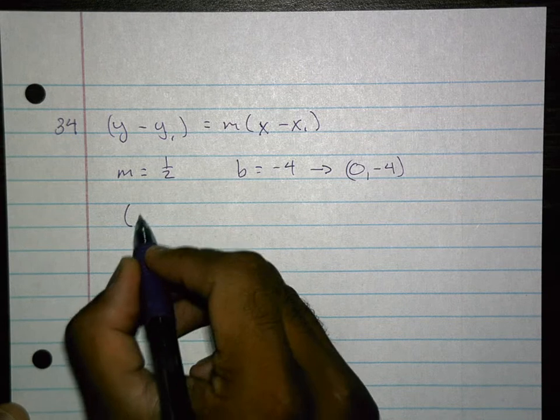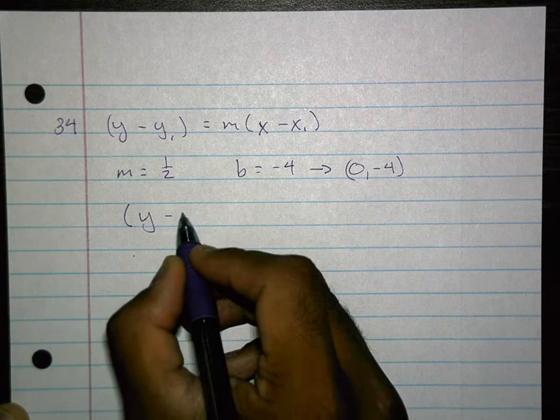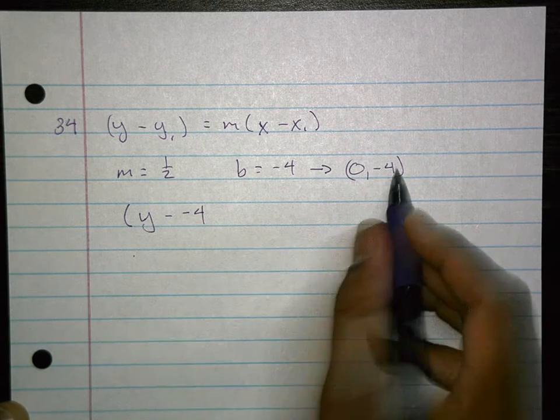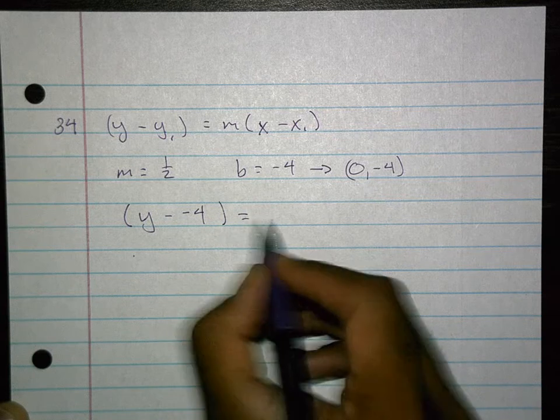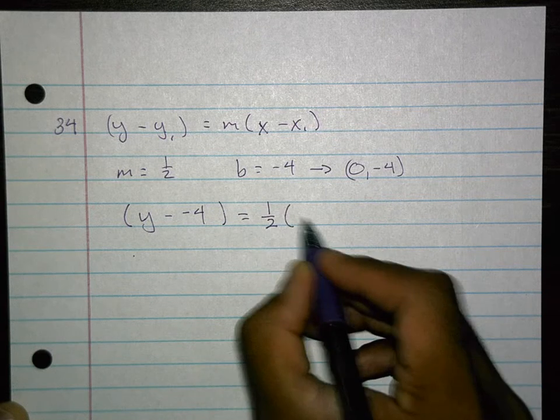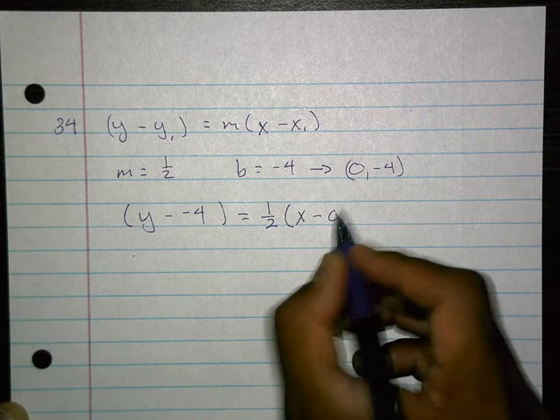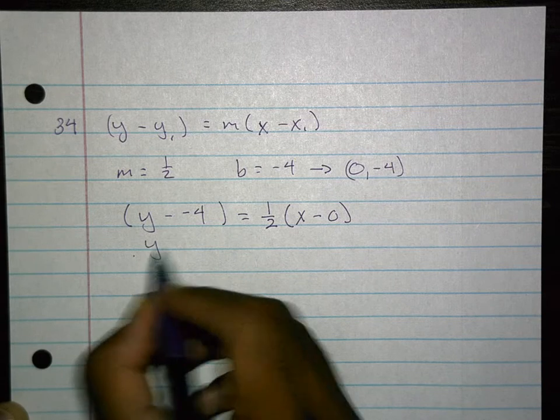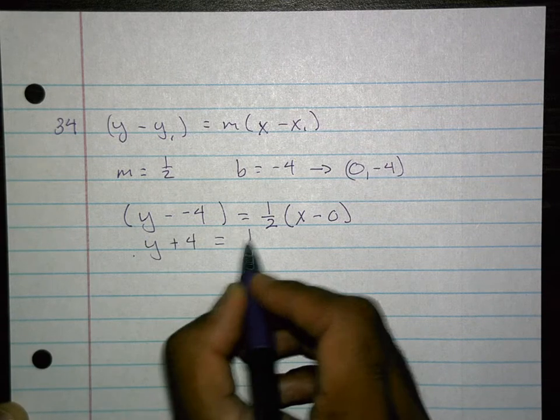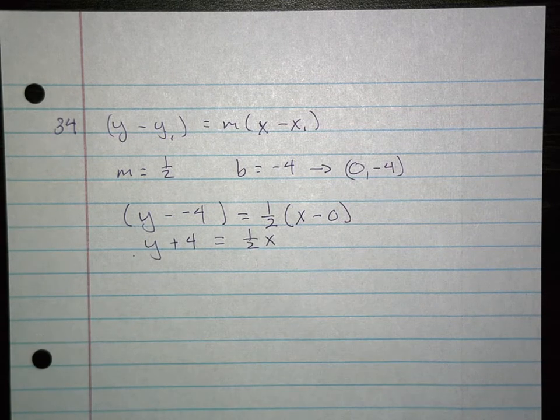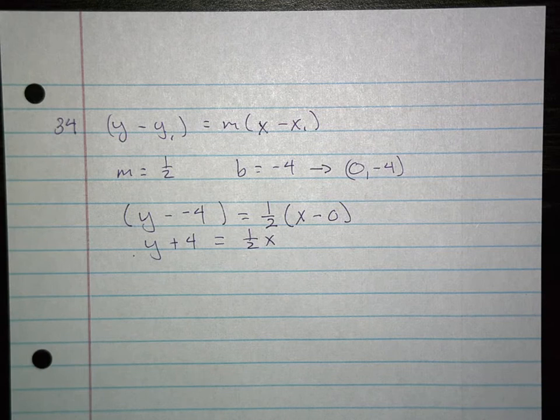Plugging that in I'm going to get y minus negative 4, there's my y value, equals m times x minus 0. And then I would say y plus 4 equals one-half x. I don't need to solve for y because it wants it in point-slope form.